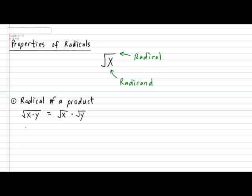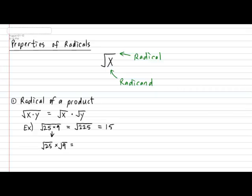So √(X·Y) can be rewritten as √X multiplied by √Y. Let's do a quick example: what is the square root of 25 times 9? We know 25 times 9 is 225, so this is the same as √225, which equals 15. Using the property, √(25×9) = √25 × √9 = 5 × 3 = 15. This confirms the property in action.